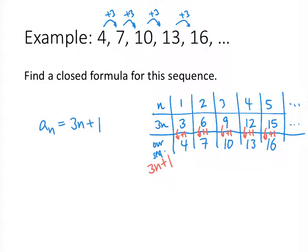We call this closed rather than recursive because on the right-hand side there's no reference to previous terms. A recursive definition is defined in terms of what came before, but with our closed definition we don't need to know what came before. We just plug in n, the position in the sequence, into that formula and it spits out the number in the sequence.